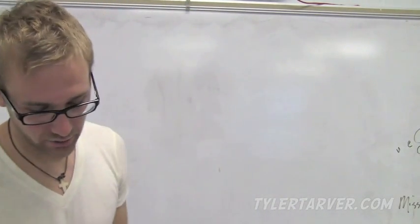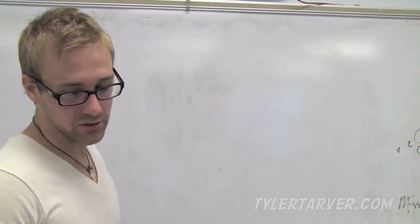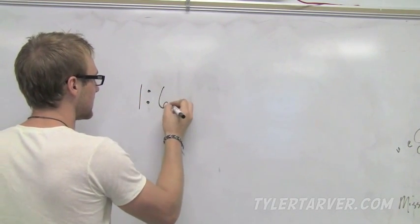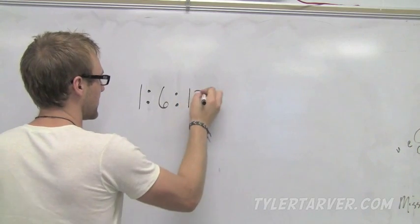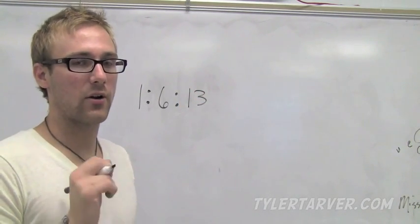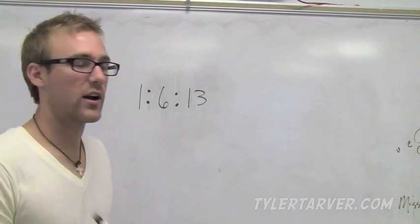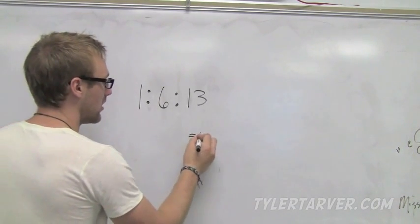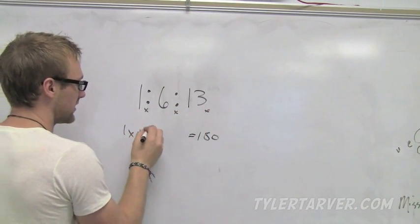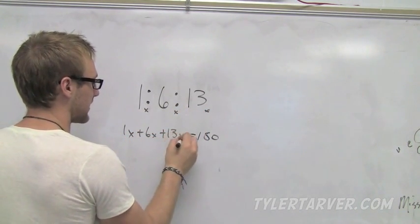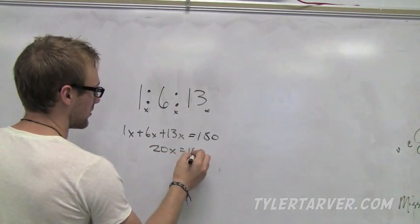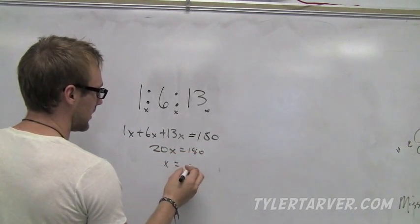Sometimes you'll see a ratio like this. We'll talk about the angle measures in a triangle is 1 to 6 to 13. What do we know the angle measures always add up to in a triangle? Triangle always adds up to 180. So what we do is stick x behind each of these: 1x plus 6x plus 13x. Now we simplify and solve it. That's 20x equals 180. x equals 9.